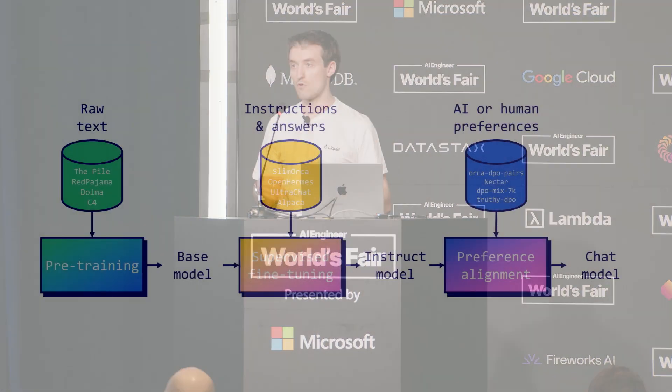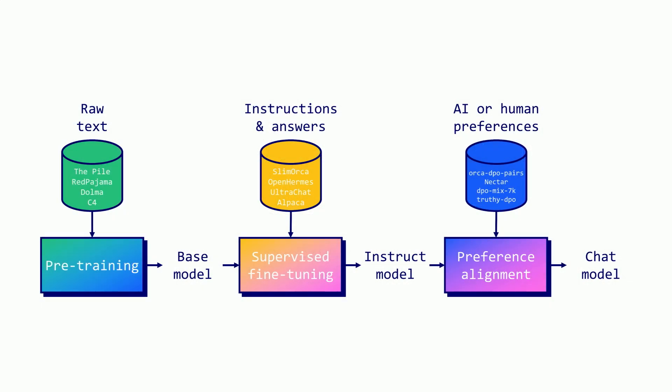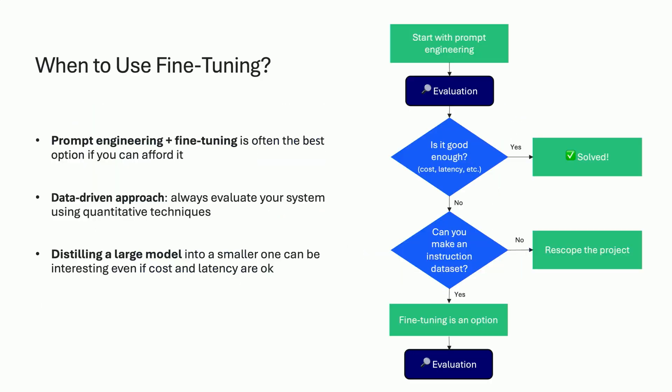Then we have a third and final stage — the preference alignment stage — where we give human preferences to align the model to how we want it to behave, and the result is commonly referred to as a chat model.